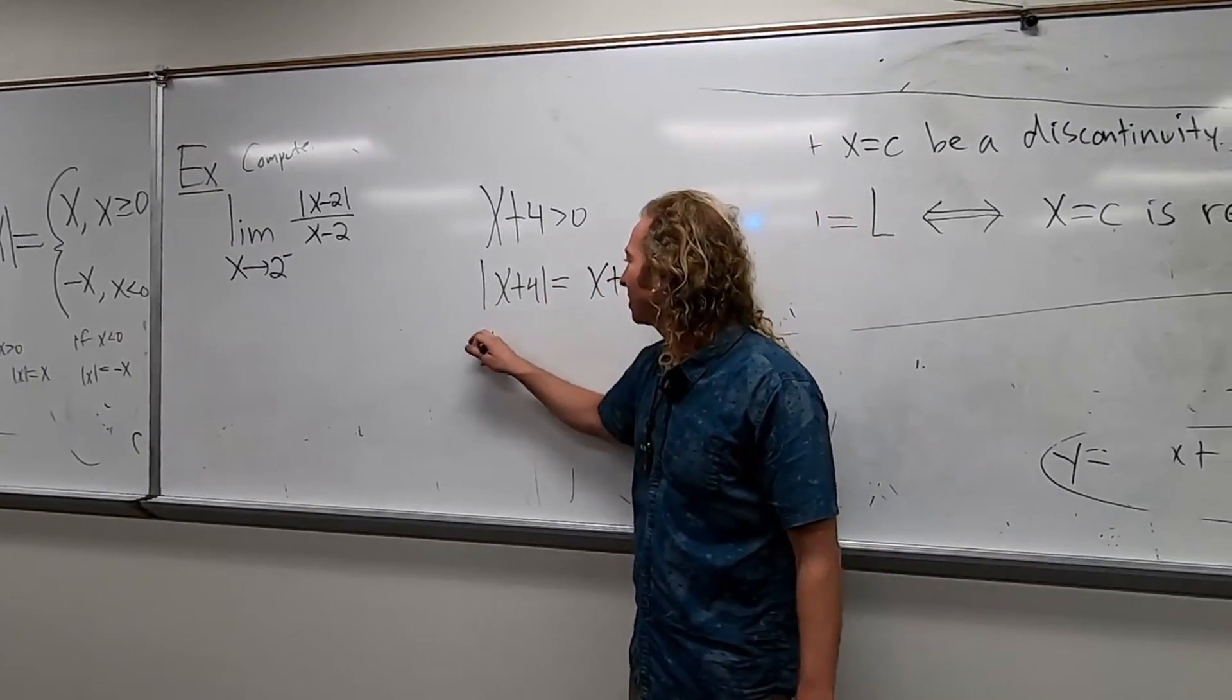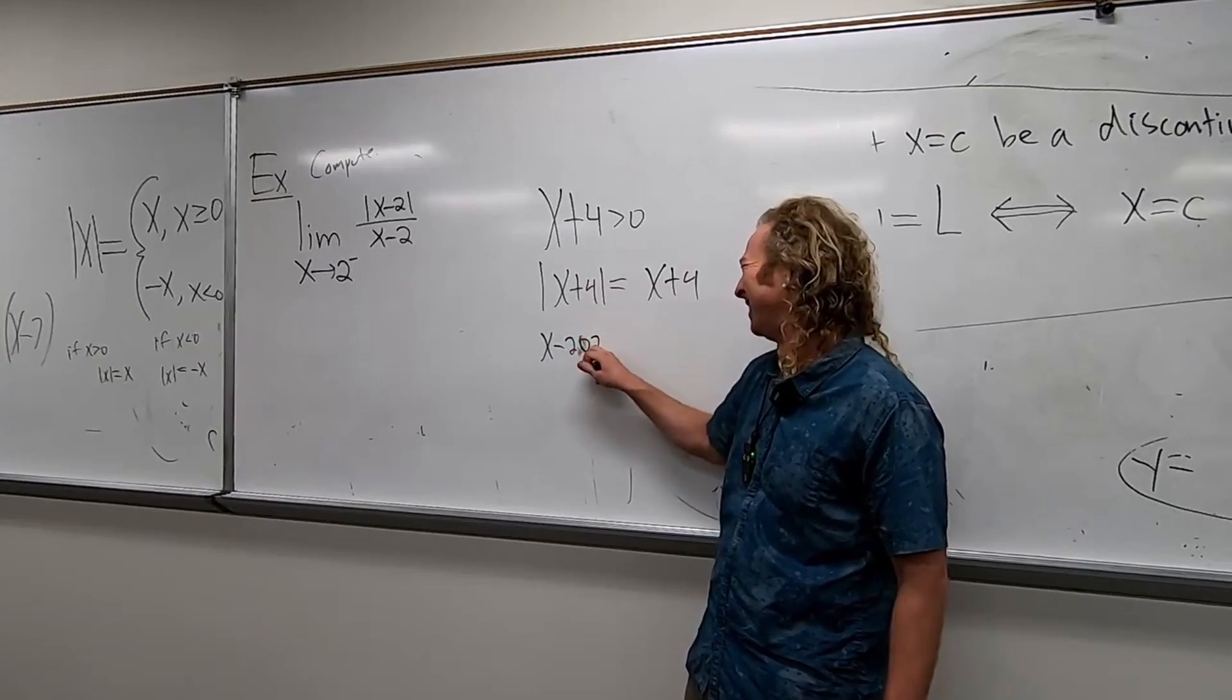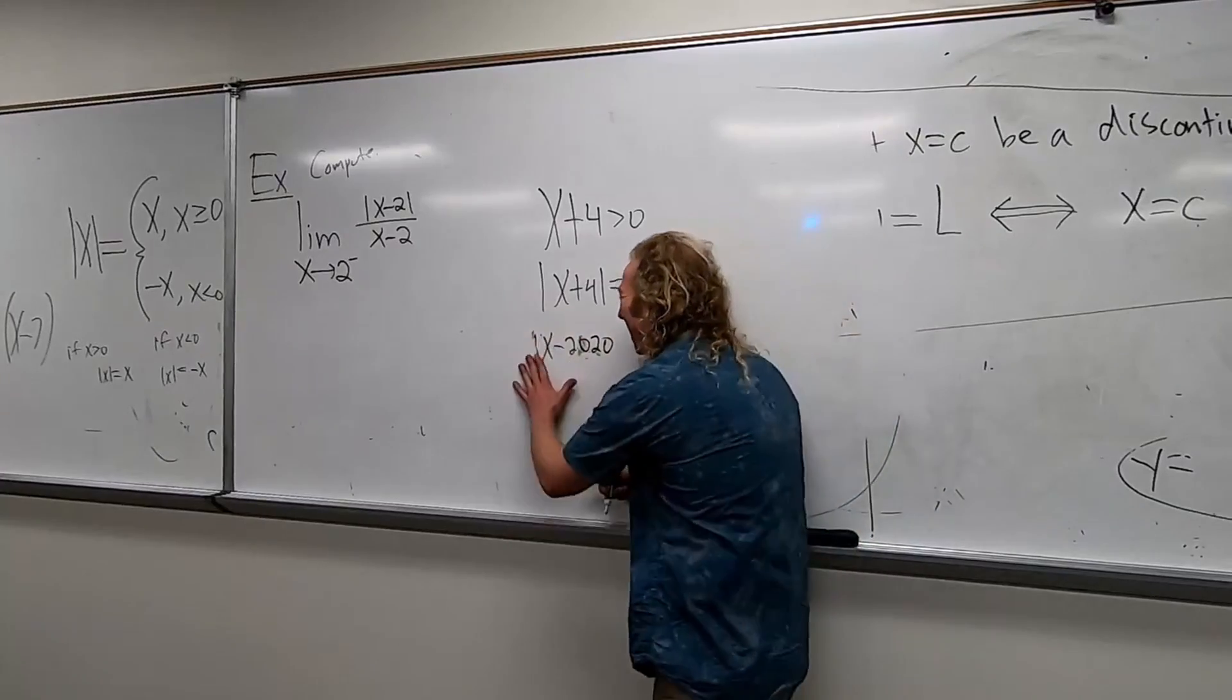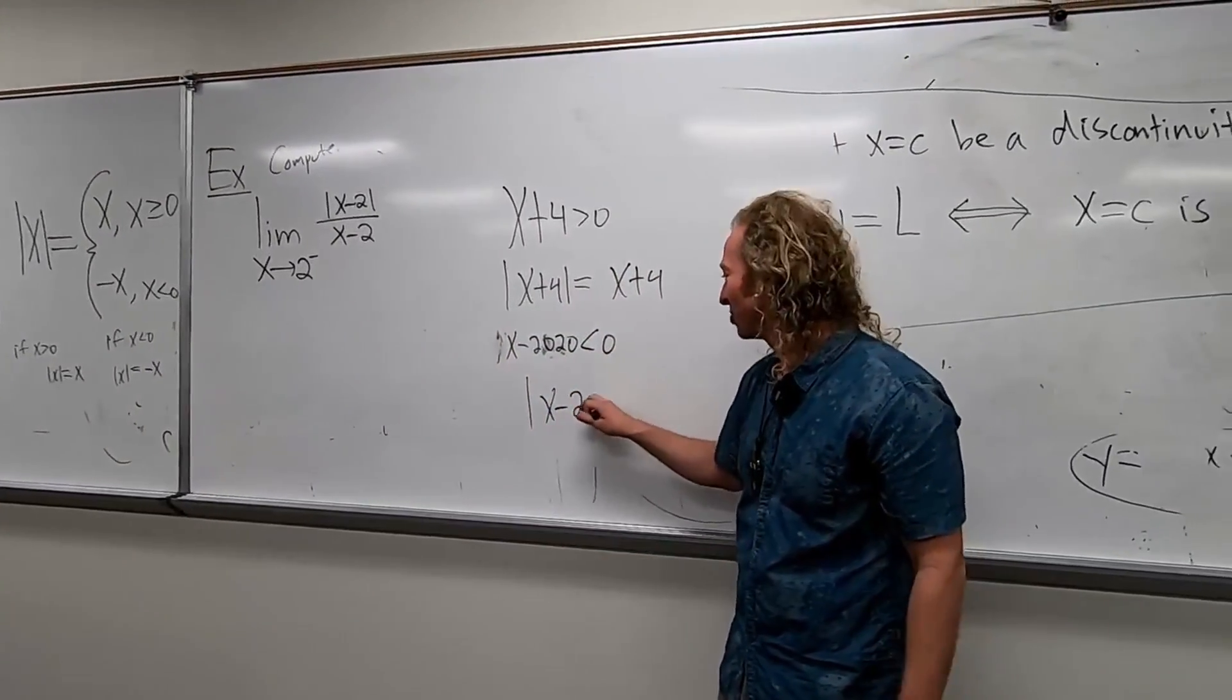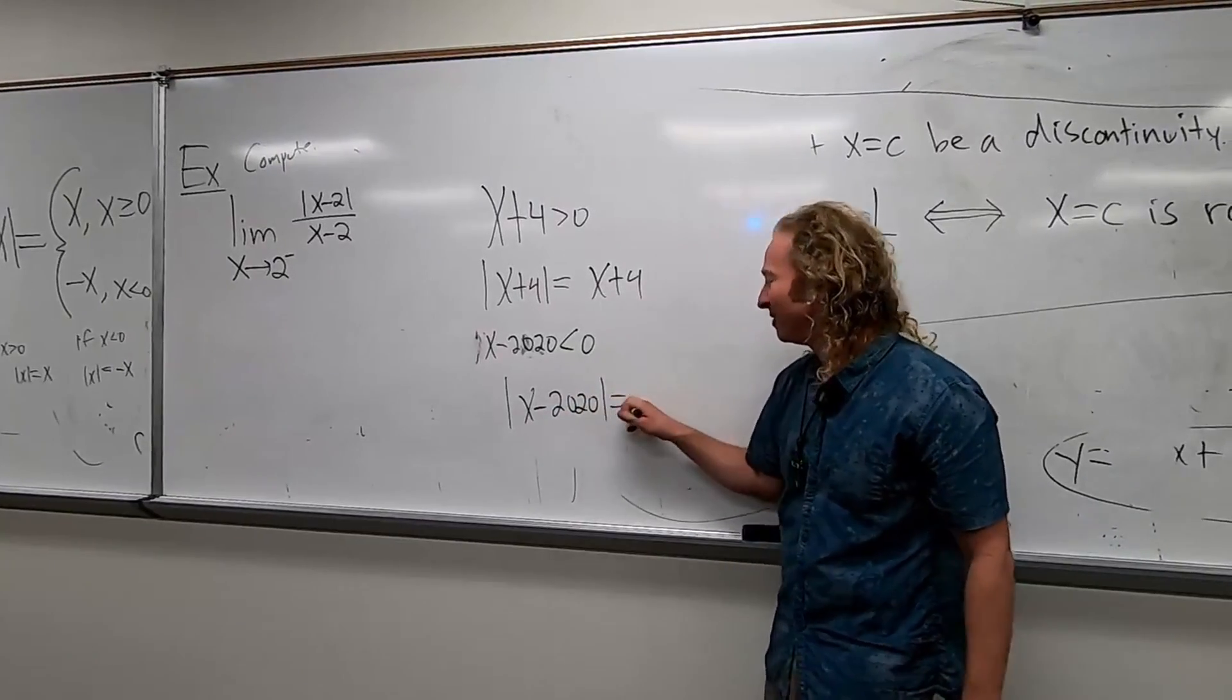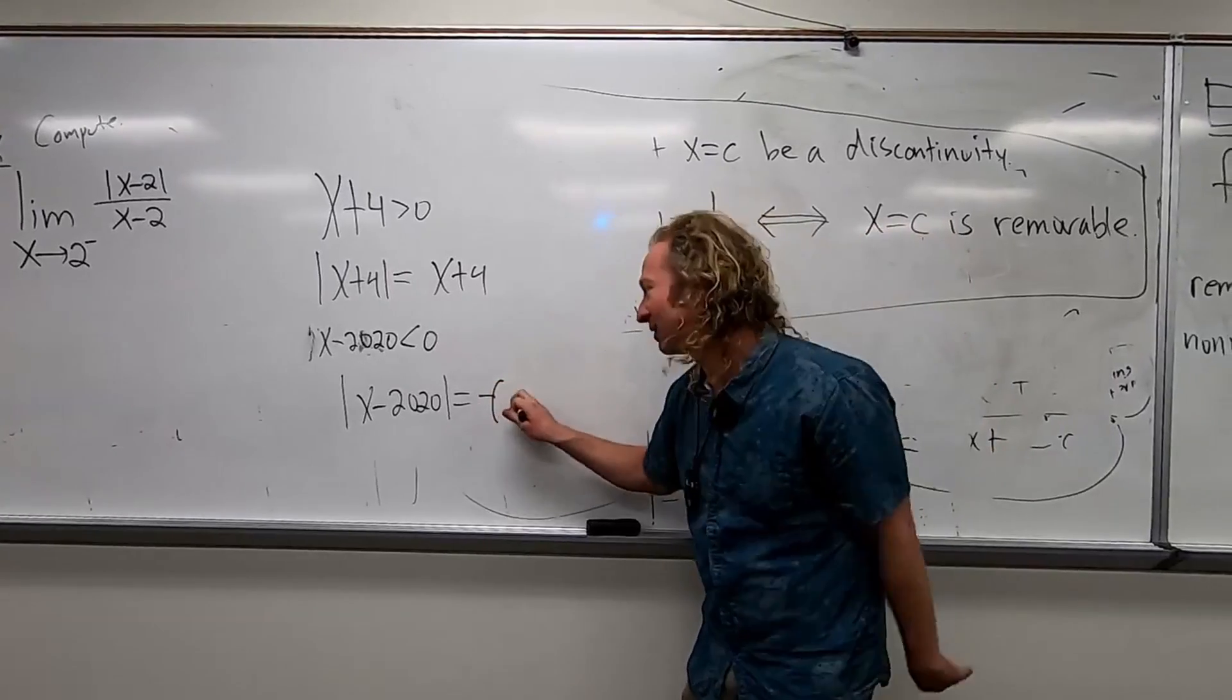What if you have x minus 20? And it's less than 0. Jeez, okay. And then you take the absolute value of x minus 20. I can't even write it. It's so weird. Do you need a negative here? Yes. Do you need parentheses? Yes. Very important. Good.